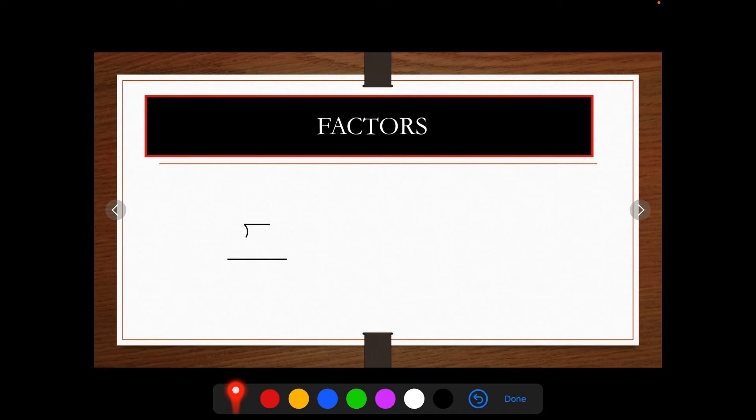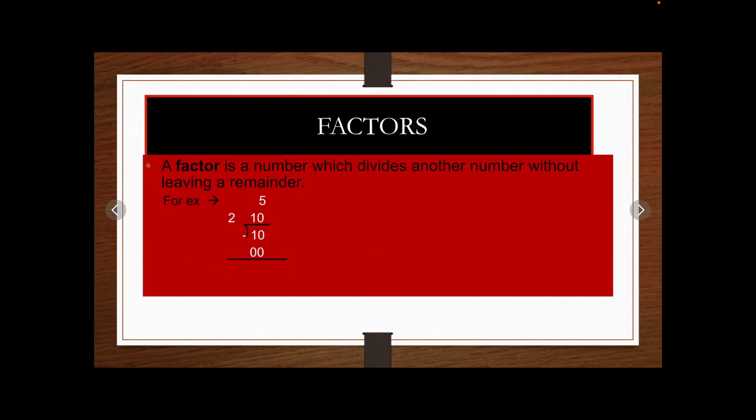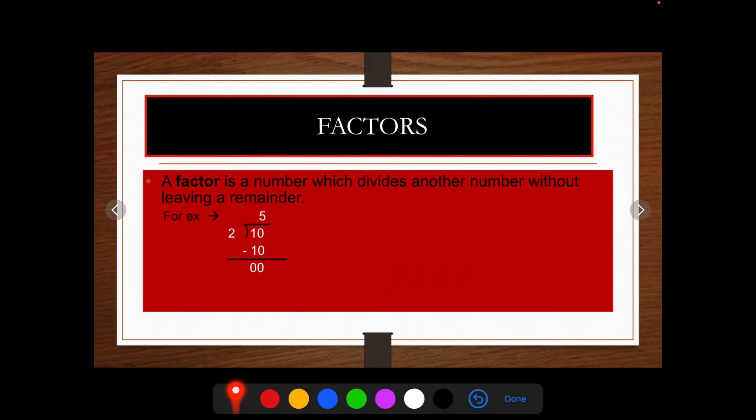Before going to start HCF method, first focus on factors. A factor is a number which divides another number without leaving a remainder. For example, 10 divided by 2, we get remainder as 0. So we can say that 2 is a factor of 10.